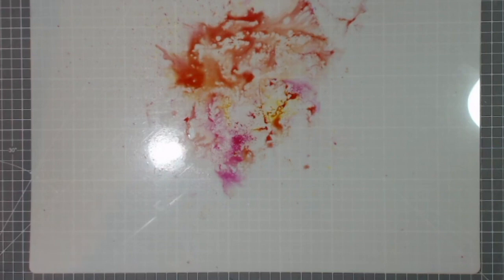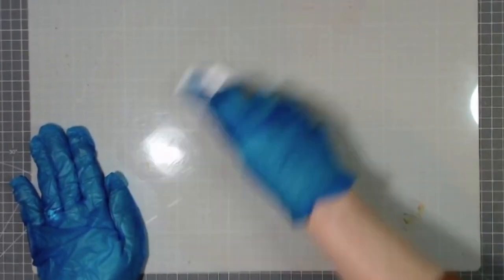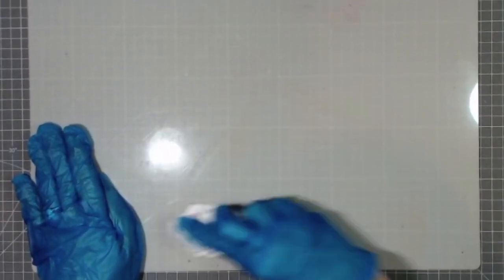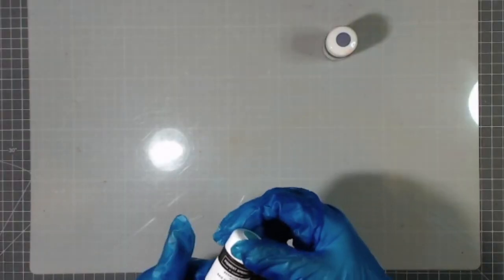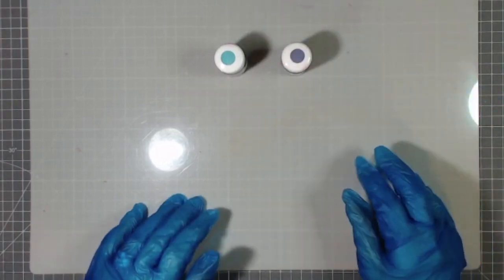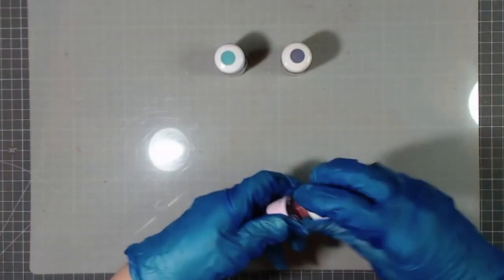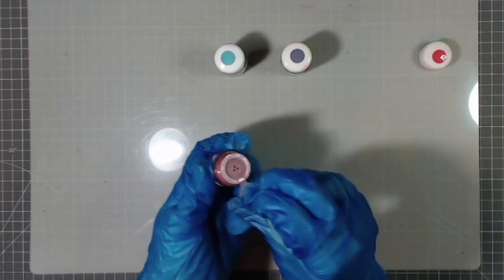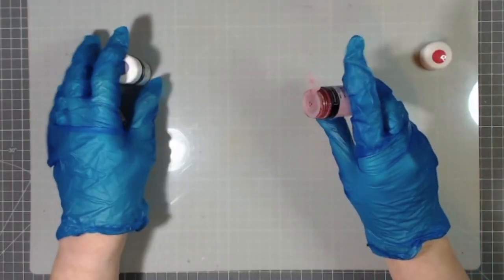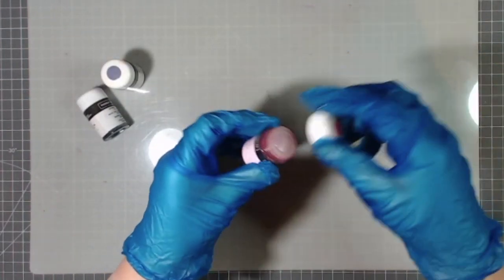Okay so should we try a different color, why not? Just clean up with a bit of paper towel. Let's try gorgeous grape and we have some Bermuda Bay and shall we leave it at those two or shall we throw in a tiny bit of the melon mambo again?